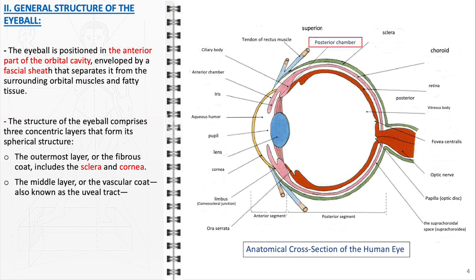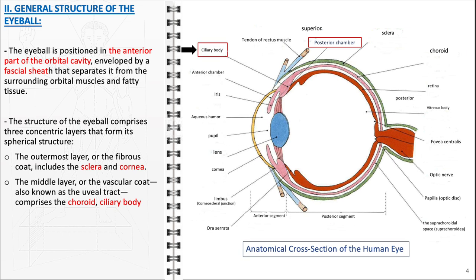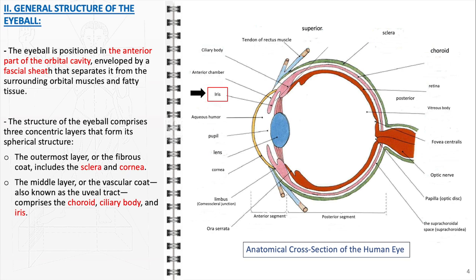The middle layer, or vascular coat, is also referred to as the uveal tract. This includes the choroid, ciliary body, and iris. The choroid lies between the retina and the sclera, rich in blood vessels, providing oxygen and nutrients to the eye. The ciliary body, adjacent to the lens, contains the muscles that adjust the lens's shape for focusing, while the iris, the colored part of the eye, contains the pupil and functions to regulate the amount of light that enters.